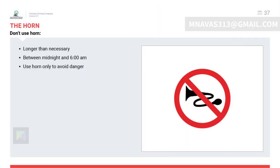The horn is used to warn others and should be used in very short beeps only. In residential areas, using the horn is prohibited from midnight to 6 o'clock in the morning. Horn use should also be avoided near schools, courts, hospitals, and mosques.